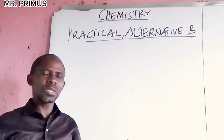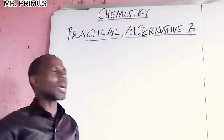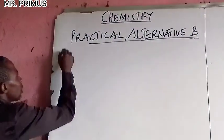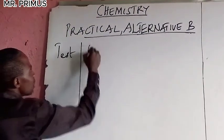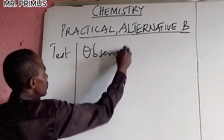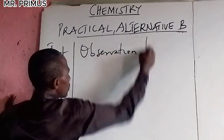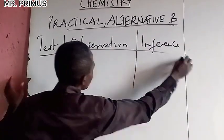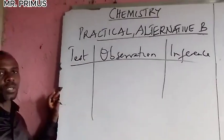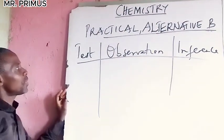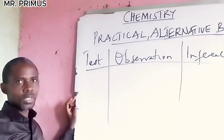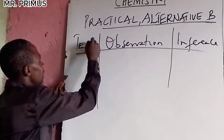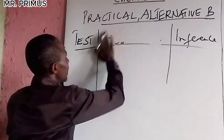Many students made mistakes during the examination. Please avoid these mistakes. Look at the table: test, observation, then inference. Is this correct? What is wrong about this? The only thing that is wrong here is that you have to write this in block letters — what we call capital letters.